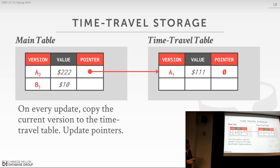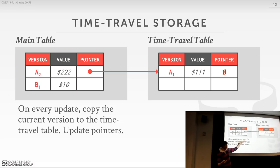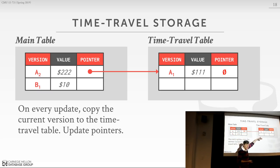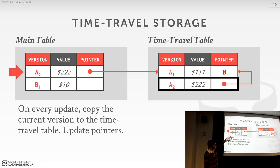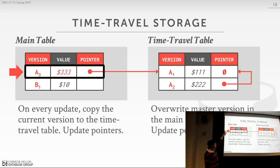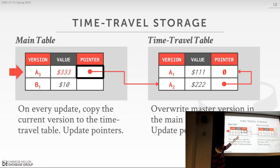The next type is time travel storage. The idea here is that we have a main table with the master — the latest version of our tuple — and a separate auxiliary table with the same schema. Any time we modify a tuple, we append the old version to the auxiliary time travel table. For example, to update A2, we copy A2 into the time travel table, update pointers to point to the new tuple, and overwrite the master version to be A3. Then I can update my pointer so it goes A3 to A2 to A1.